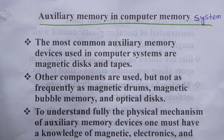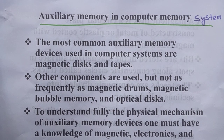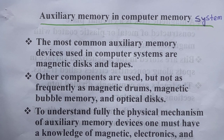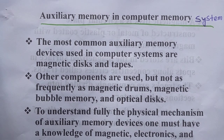Common auxiliary memory devices used in a computer system are normally used as magnetic disks or tapes. Magnetic disks and tapes are memory devices designed outside the inbuilt memory of the computer system. Because they are outside that memory, you can use them whenever they are necessary for the computer system.